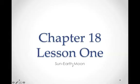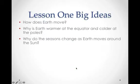Welcome to the Vodcast for Chapter 18, Lesson 1. This vodcast is about the Sun, Earth, and Moon system. Tonight we'll be talking about three big ideas for this lesson: how does the Earth move, why is the Earth warmer at the equator and colder at the poles, and why do the seasons change as the Earth moves around the sun?